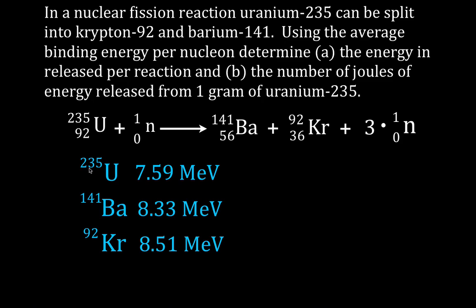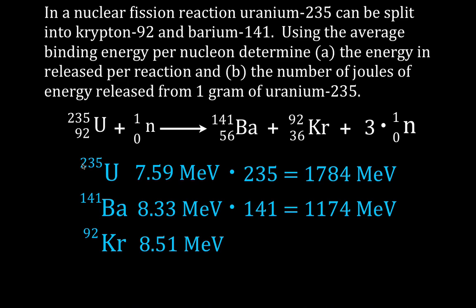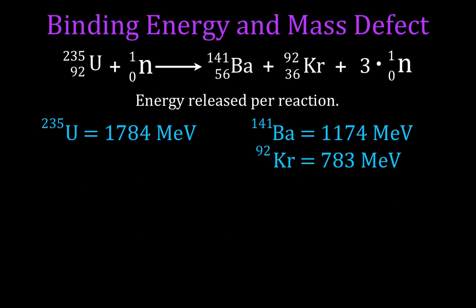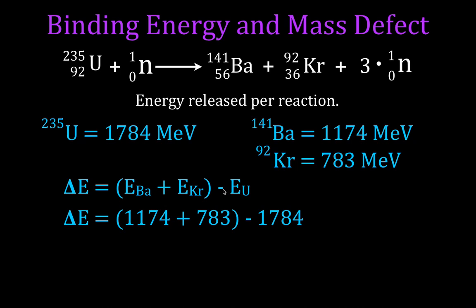For uranium-235, the mass number is 235, so we multiply 7.59 by 235. We multiply the barium value by 141 and the krypton value by 92 to get the total binding energy per nucleus for each. Then we simply take the difference: the binding energy of barium plus krypton minus that of uranium. That gives us 1174 plus 783 minus 1784.